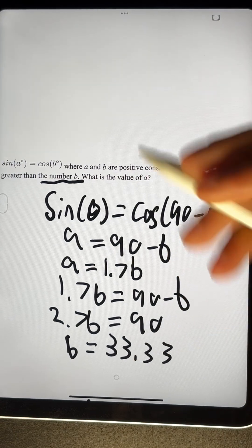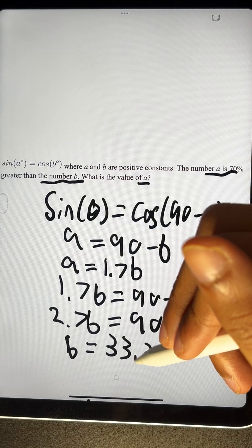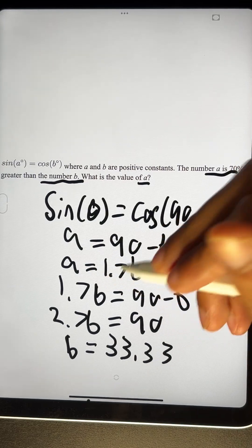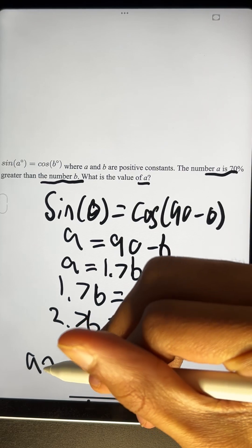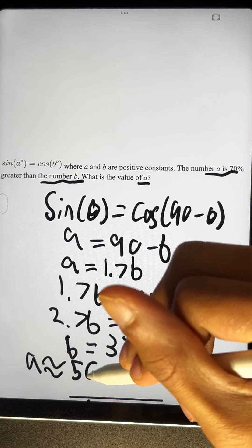OK, but we need to find A. So we can plug B back into this equation. If we do that, we get A is approximately equal to 56.67.